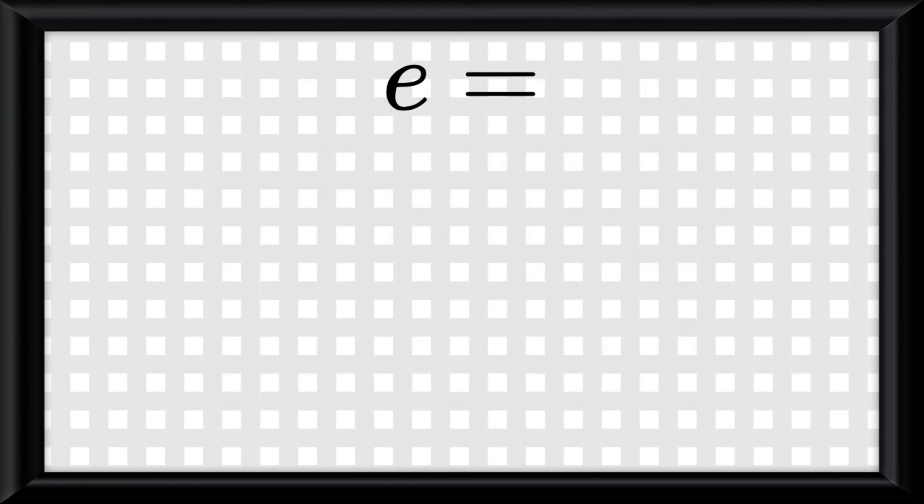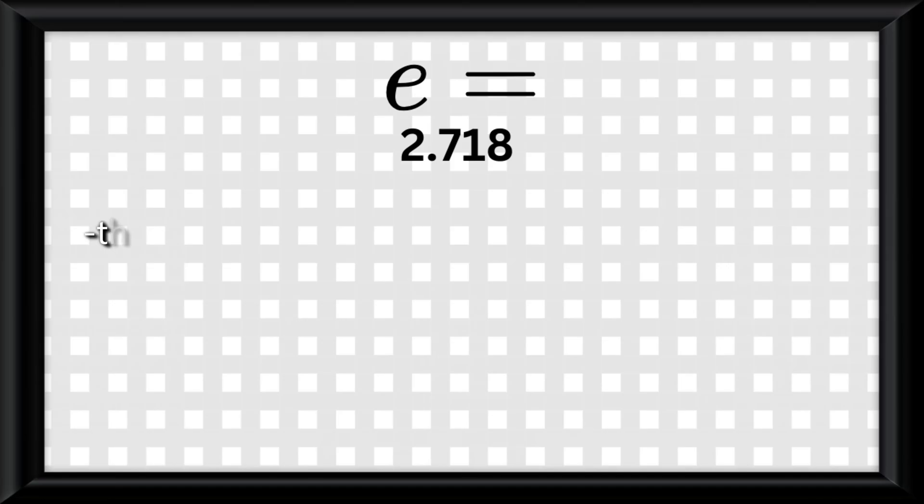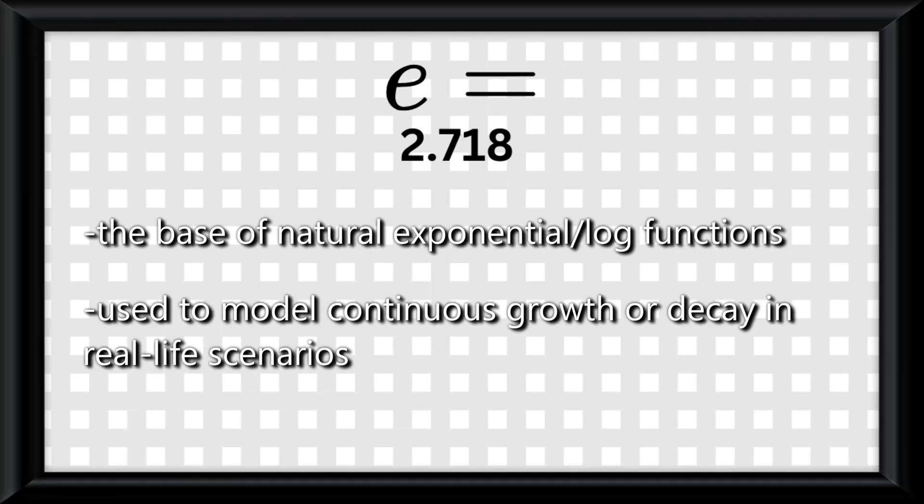This all leads into E. E is a massively long number that we're going to round to 2.718. E is the base of a natural exponential function that is used to model continuous growth or decay in real life scenarios.